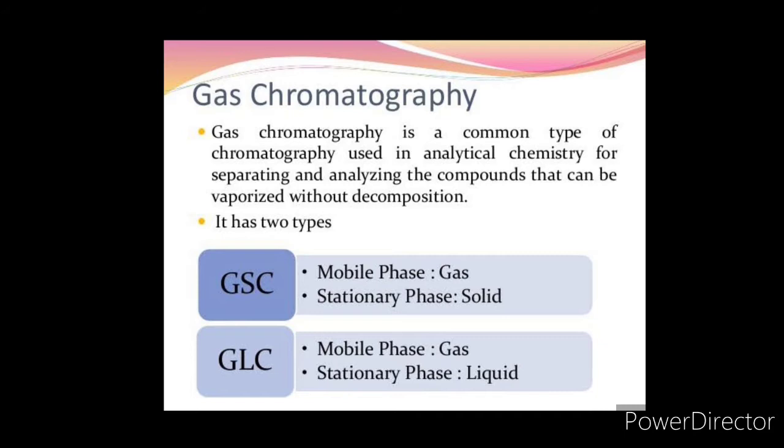Any chromatographic technique involves four very important steps. First is adsorption or retention of a substance on the stationary phase. Second, separation of the adsorbed substances by mobile phase. Third, recovery of the separated substances by continuous flow of mobile phase which is also called elution. And finally, qualitative and quantitative analysis of the eluted substances.